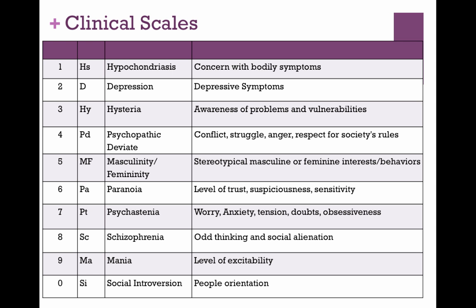Now I want to show you the clinical scales. There are many, many others, but these are the 10 main clinical scales that most psychologists rely on the most. We call these by number — psychologists will say things like 'they were a two-seven' or 'there's a neurotic triad' or 'they're elevated on six, seven, eight.' So we have groupings and we talk about them by their numbers.